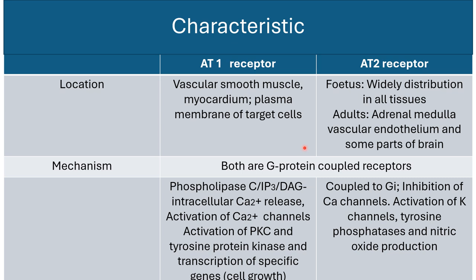Both receptors are G protein-coupled receptors. AT1 receptors stimulate phospholipase C, inositol triphosphate, and diacylglycerol, increasing intracellular calcium, activating calcium channels, protein kinase C, and tyrosine protein kinase, leading to transcription of specific genes and cell growth. AT2 receptors are coupled to G-inhibitory pathways, causing inhibition of calcium channels, activation of potassium channels, tyrosine phosphatase, and nitric oxide production, making them an inhibitory type of receptor.